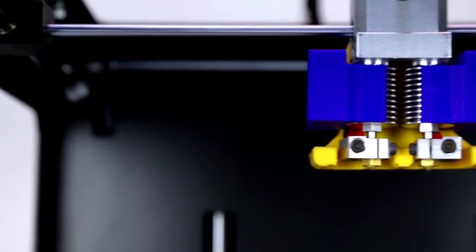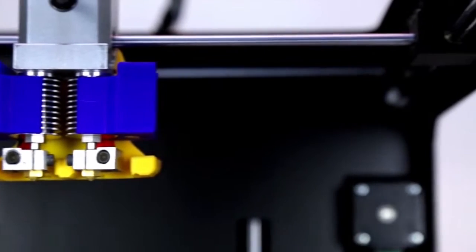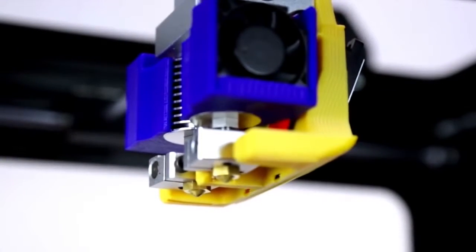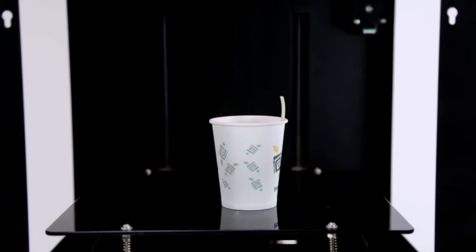XT Plus is equipped with two extruders, allowing users to have two colors on the same print. Also, you can use soluble filaments as support. For example, this PVA simply dissolves through time when you put it in warm water.